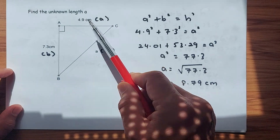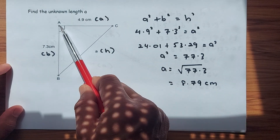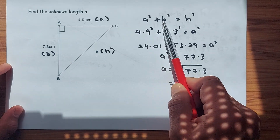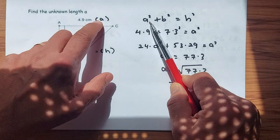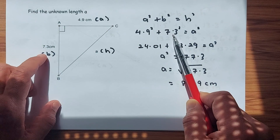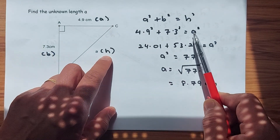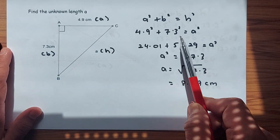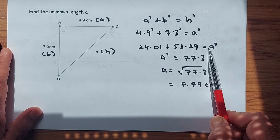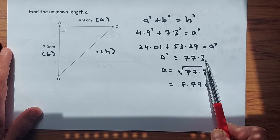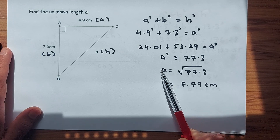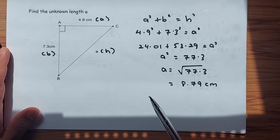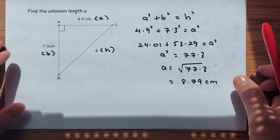Label 4.9 as A and 7.3 as B. The longer side opposite 90 degrees is the hypotenuse. Using the formula A squared plus B squared equals H squared, substitute: 4.9 squared plus 7.3 squared equals A squared. That gives 24.01 plus 53.09, so A squared equals 77.3. To find A, take the square root of 77.3, which gives 8.79. That will earn you a mark in the exam.